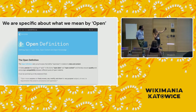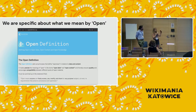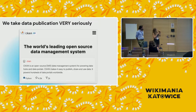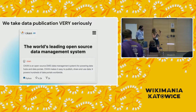At Open Knowledge Foundation, we are very specific about what we mean by open. We publish the open definition, which is largely built on top of the open source definition that defines what open data and open content is. We also take data publication very seriously, and we are the ones behind CKAN, which is an open source data management system powering data hubs and open data portals for governments and public administrations around the world.